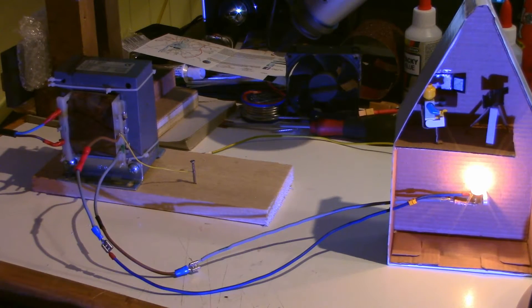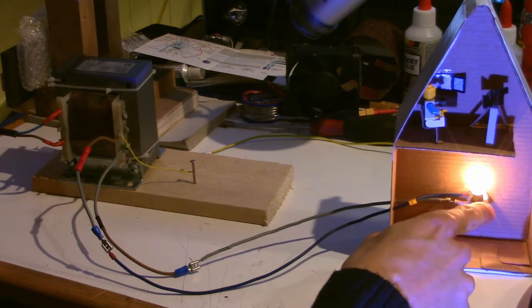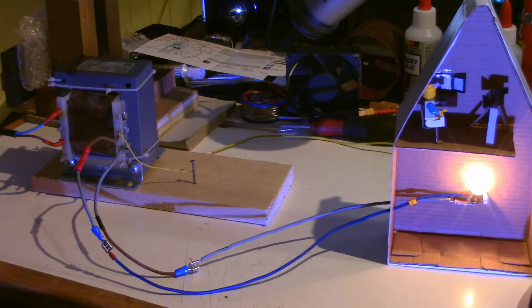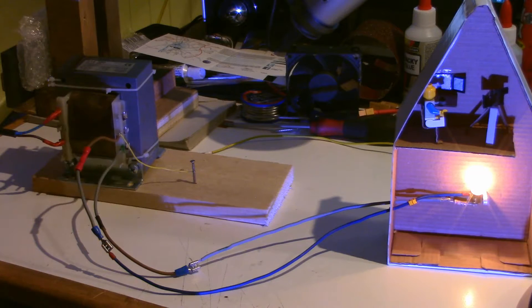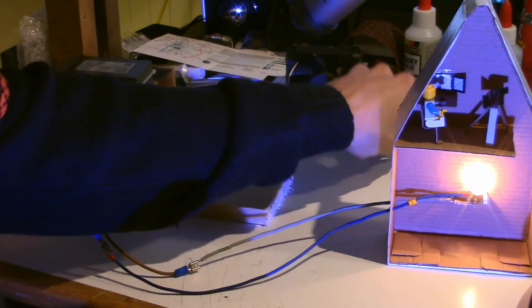But what if something goes wrong with the wires? What if the live wire gets loose and touches this metal bracket that is used to mount the lamp? Or what if inside your washing machine, the live wire gets loose and touches the metal housing of the washing machine? So this is where the ground wire comes in.